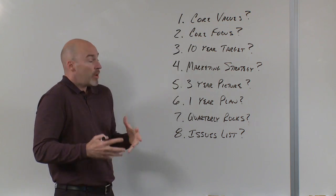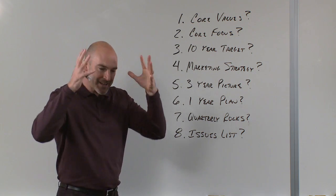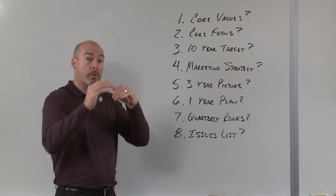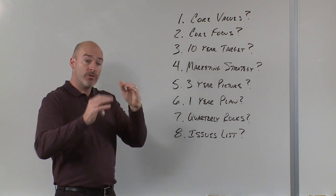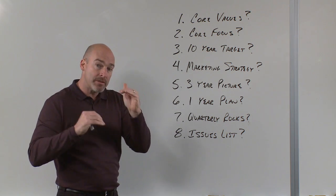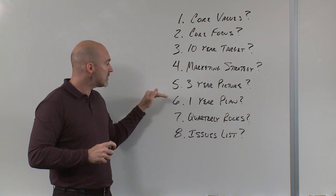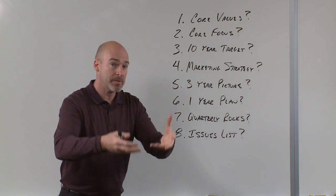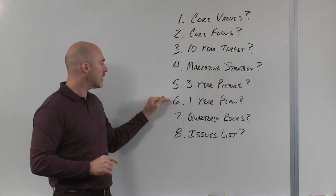Question number six is then what is the one-year plan? So going into the next year, what is the plan? What is the revenue, profit, and measurable goals? And then what are the three to seven most important things that must get done in the next year to make that one-year plan a reality, to put you on track for that three-year picture? Agreeing on what are all of our issues in the coming year, less is more, and again, agreeing.